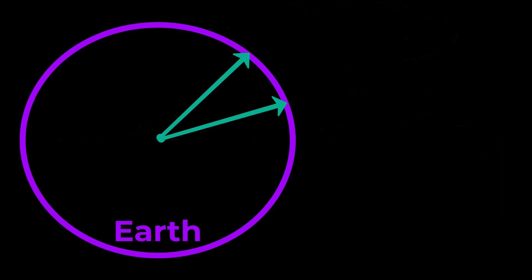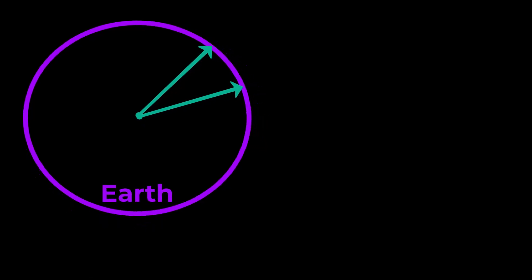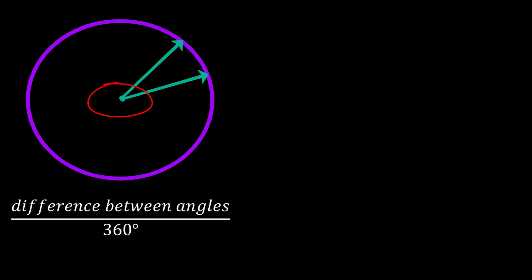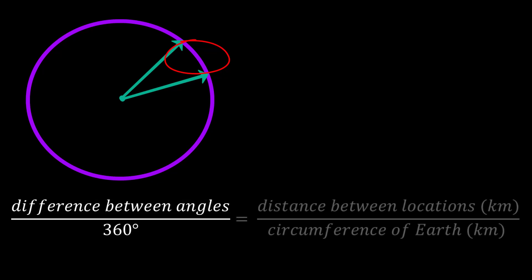We're going to set up a very basic proportion by comparing the part of the circle that we know to the entire circle. The angle between the two green lines is part of the circle and we know that 360 degrees is what it takes to make the entire circle. The part of the circle that lies between the two green lines represents the distance from the Tropic of Cancer up to our observing location. Again we can compare that part of the circle to the entire circle which is the circumference of the earth. By doing so we get this basic proportion.